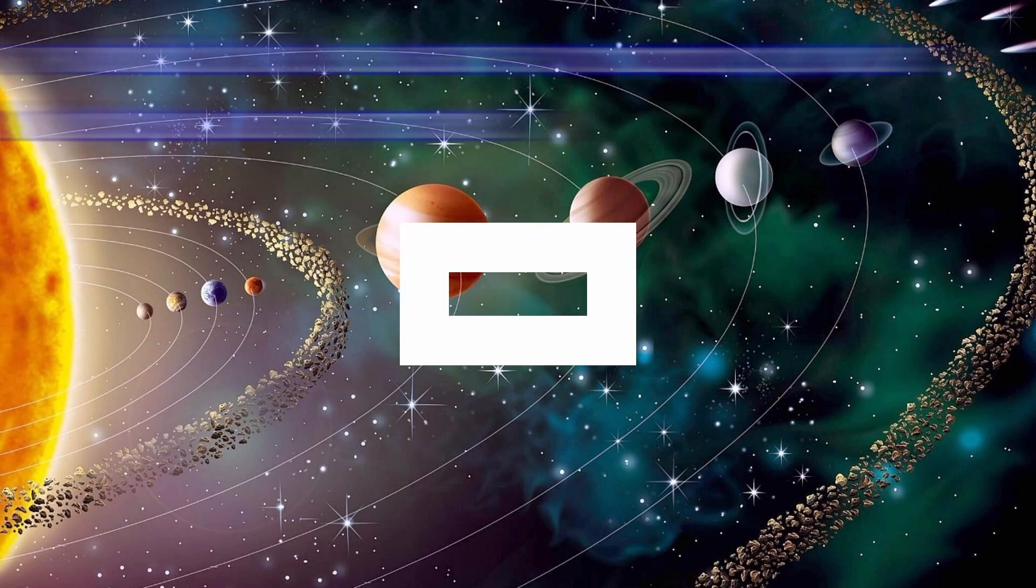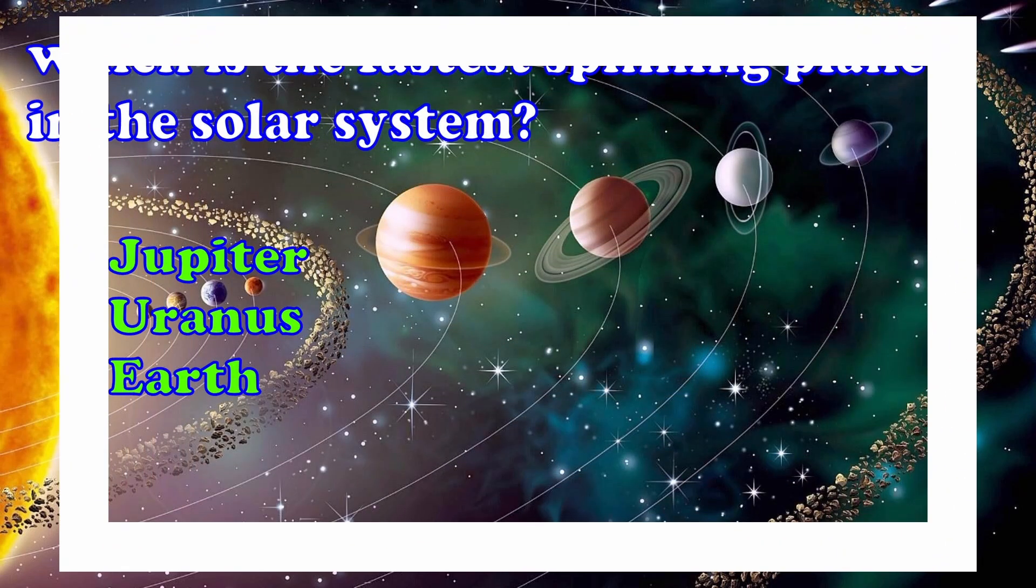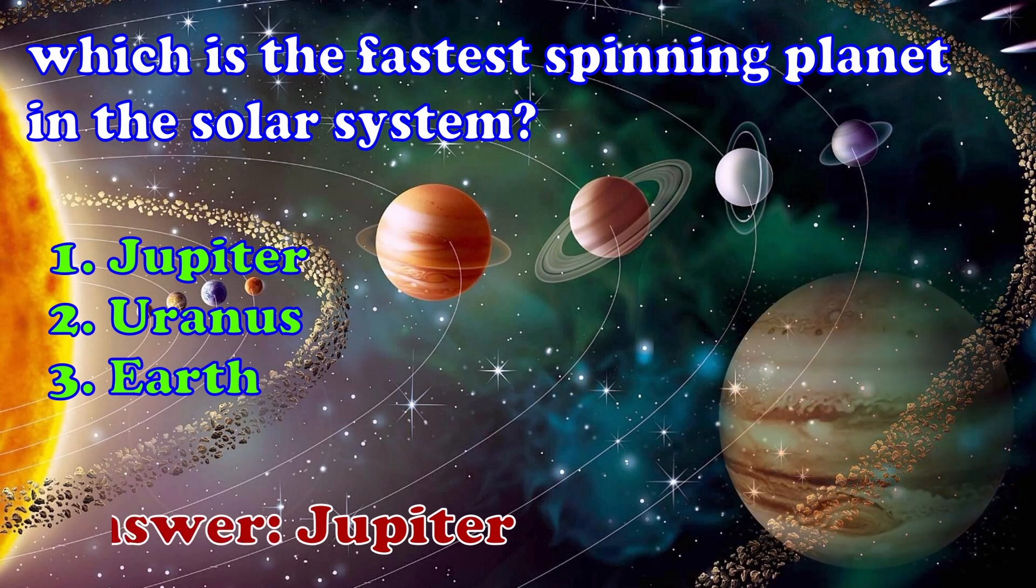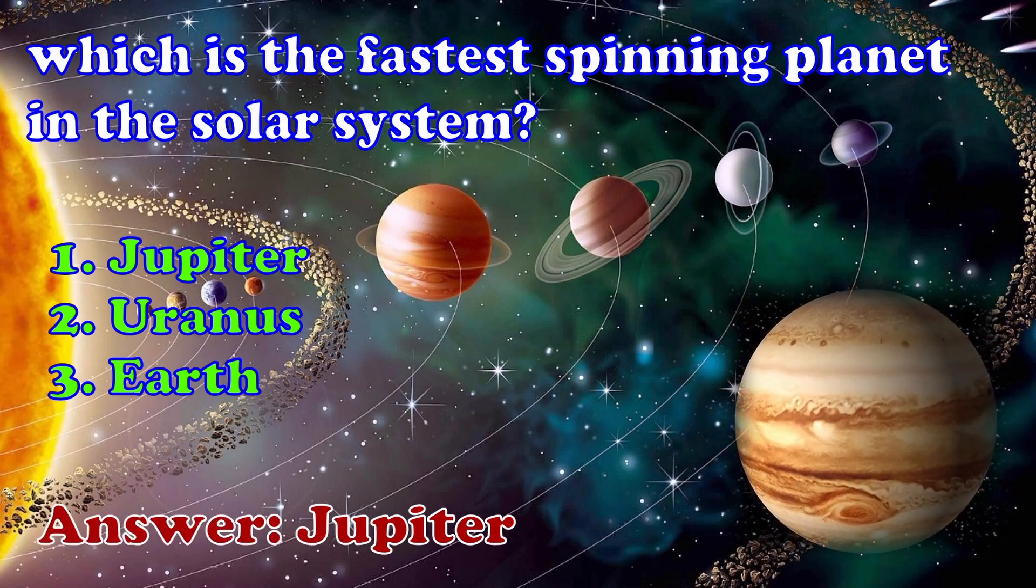Which is the fastest spinning planet in the solar system? 1. Jupiter, 2. Uranus, 3. Earth. Answer is Jupiter.